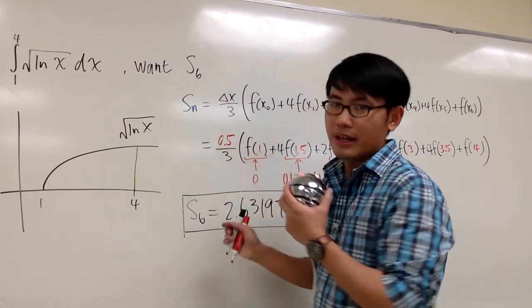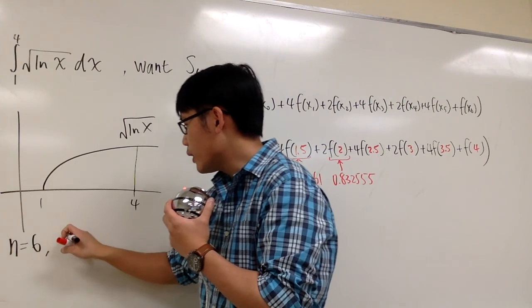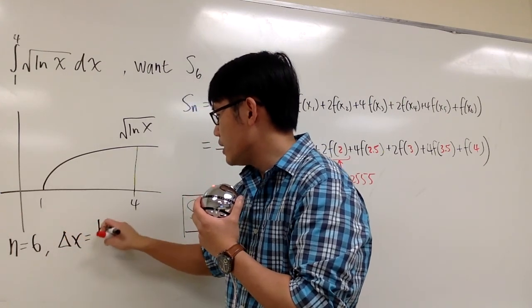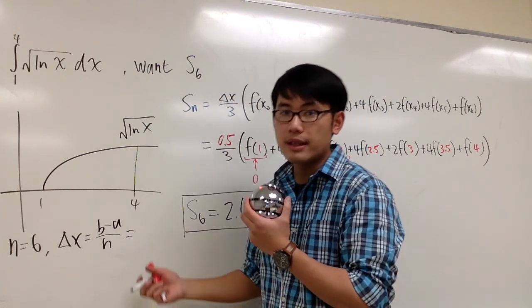But we do need to know what's the delta x. First of all, we want n to be 6, and delta x will be b minus a over n. That's the formula for delta x.